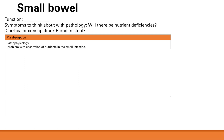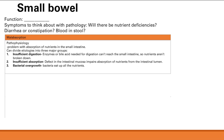Malabsorption is a problem with absorption of nutrients in the small intestine. It can be substratified into three major groups: insufficient digestion, where enzymes or bile acids needed for digestion can't reach the small intestine so nutrients aren't broken down and therefore aren't absorbed; problems with absorption itself, where a defect in the intestinal mucosa impairs absorption of nutrients from the intestinal lumen despite digestion occurring; and bacterial overgrowth, where bacteria consume the nutrients leading to nutrient deficiencies.